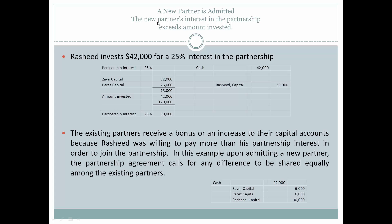Next, a new partner is admitted and the new partner's interest exceeds the amount invested. This can happen when the partnership is very attractive — it may have significant income potential, or perhaps it owns valuable property that is appreciating. The new partner is willing to pay more than the value of the percentage of partnership interest he is receiving.